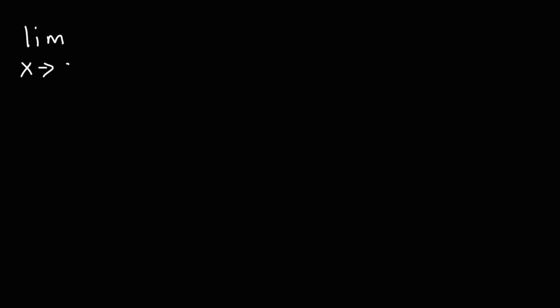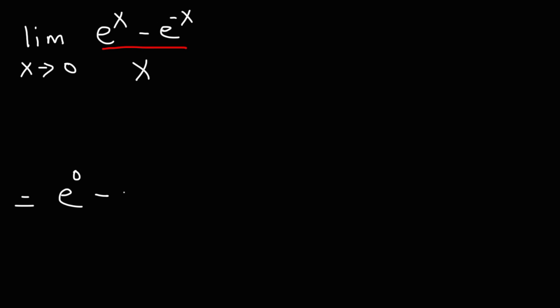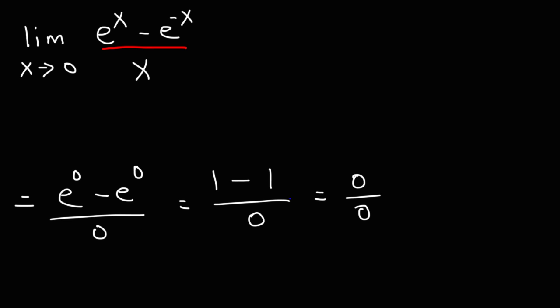Now let's try one more example, similar to the previous one. We have the limit as x approaches 0 of e to the x minus e raised to the negative x, divided by x. Feel free to try this problem yourself based on what we did in the last problem. Using direct substitution, we get e to the 0 minus e to the negative 0, divided by 0. Since e to the 0 is 1, we again get 0 over 0 — an indeterminate type. Thus, we need to use L'Hôpital's rule.